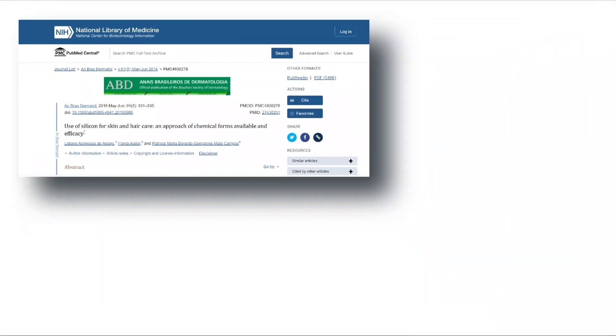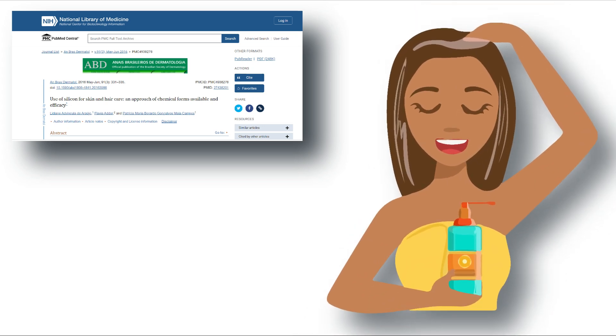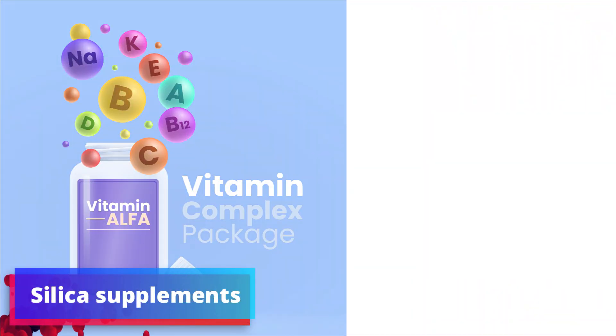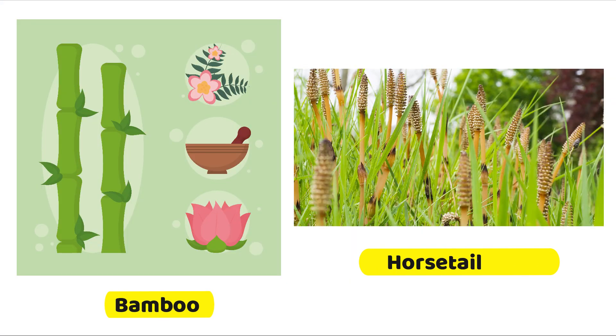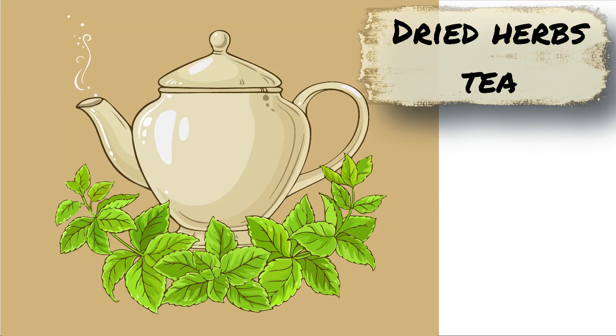According to research done in 2016, it has been found to deliver essential nutrients to your scalp and hair follicles. Silica supplements commonly come from bamboo or the horsetail plant. You can also use dried herbs to make a tea of silica.